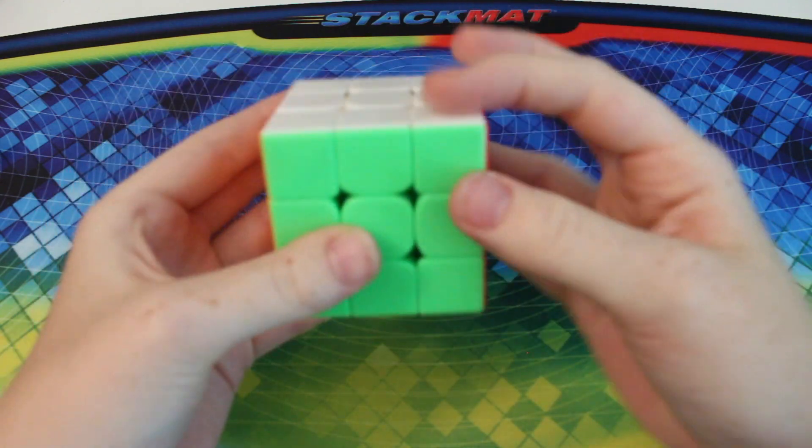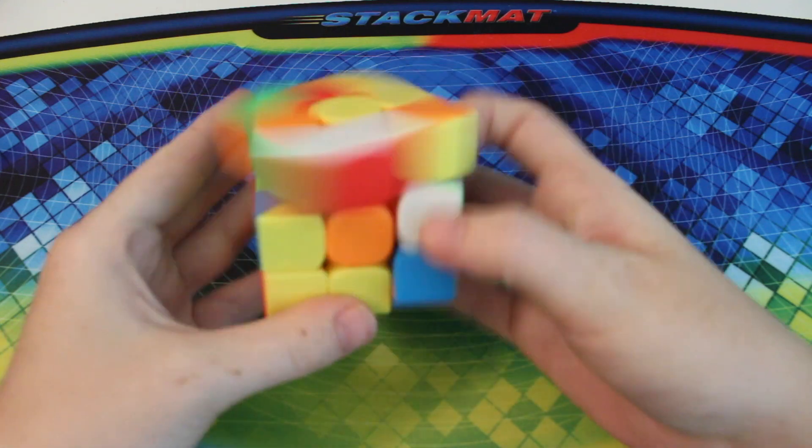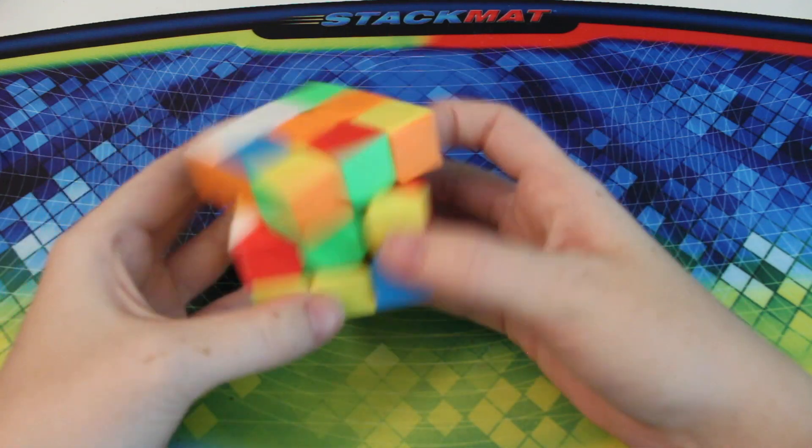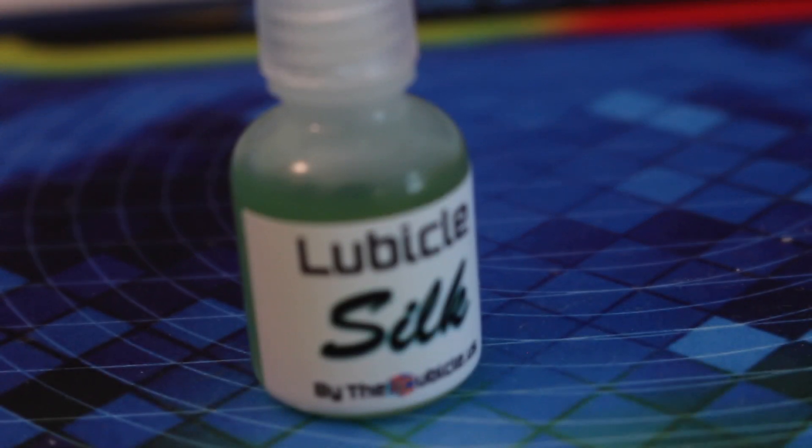The turning of this cube is buttery smooth and feels very slick. The magnets are strong enough to help your turning be more accurate and prevent overshooting, but you don't really feel them when you're turning fast. I lubed this cube with my favorite all-around lube, Lubicle Silk.